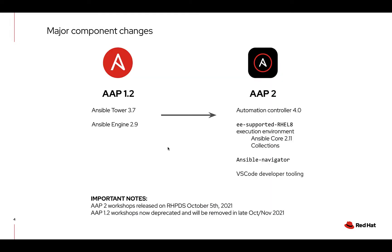What has changed between AAP1.2 and AAP2? Ansible Tower is no more. It has evolved into a new tool called Automation Controller. Automation Controller is kind of the evolution, but it's more than what Tower was — it actually has support for things like execution environments. Ansible Engine 2.9 is also no more. We move on to what we call execution environments, and they use Ansible Core 2.11 under the hood for all three supported ones. There's also a new command line tool called Ansible Navigator, and there's VS Code and developer tooling.